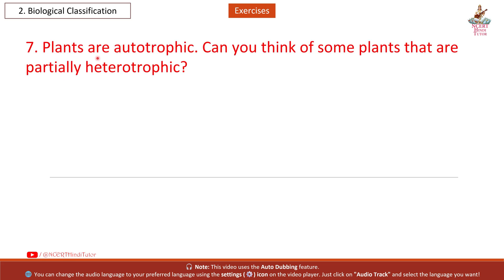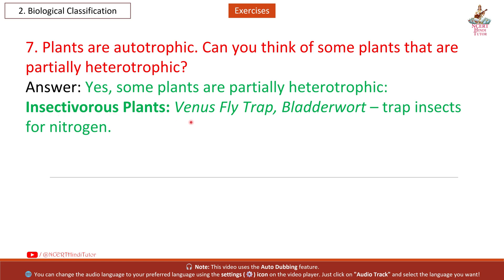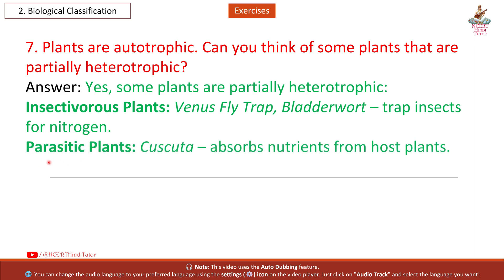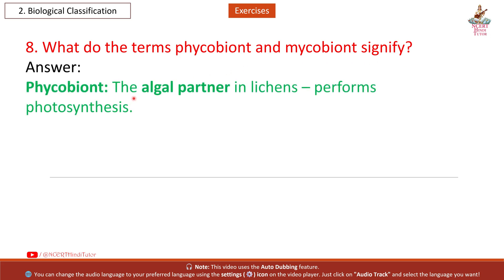Question 7: Plants are autotrophic — can you think of some plants that are partially heterotrophic? Answer: Yes, some plants are partially heterotrophic. Insectivorous plants like Venus flytrap and Bladderwort trap insects for nitrogen. Parasitic plants like Cuscuta absorb nutrients from host plants.